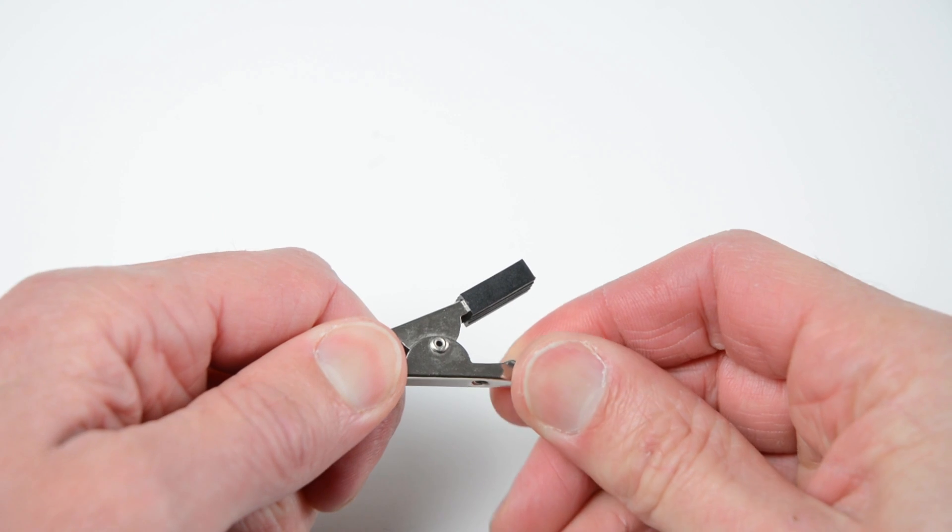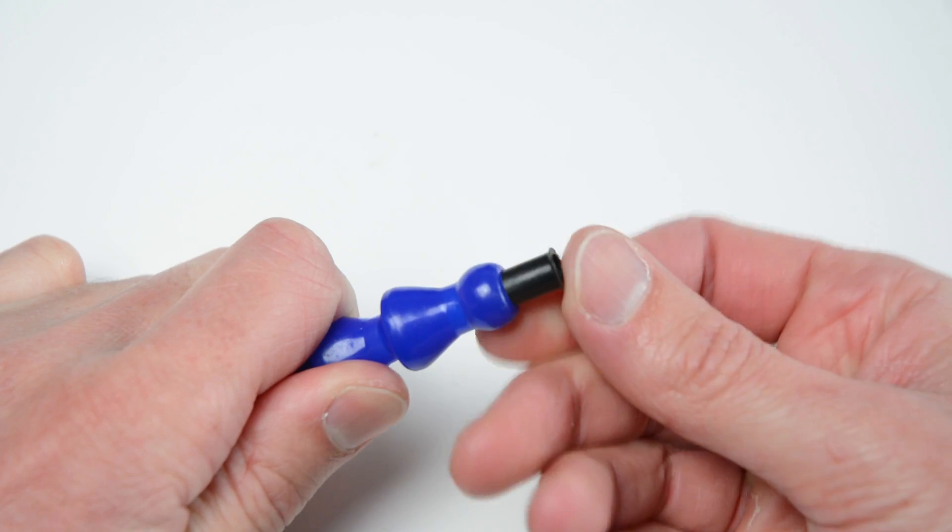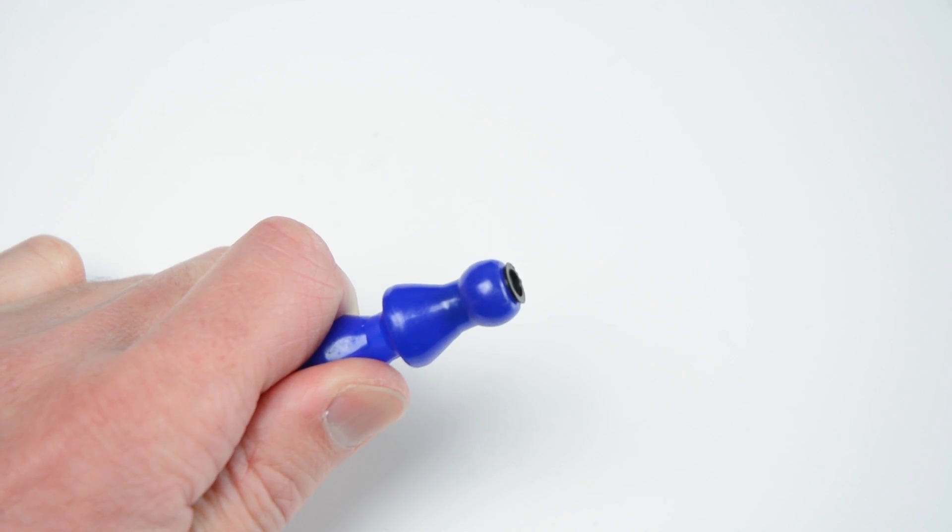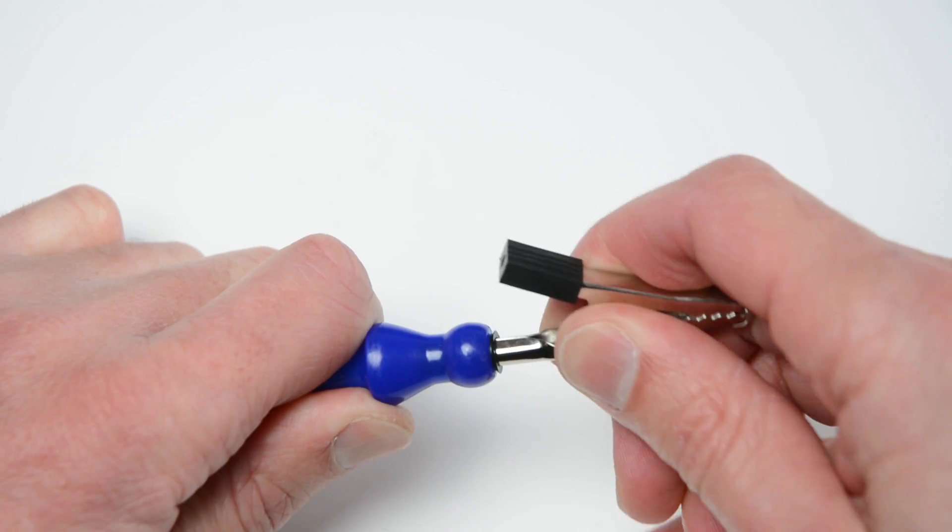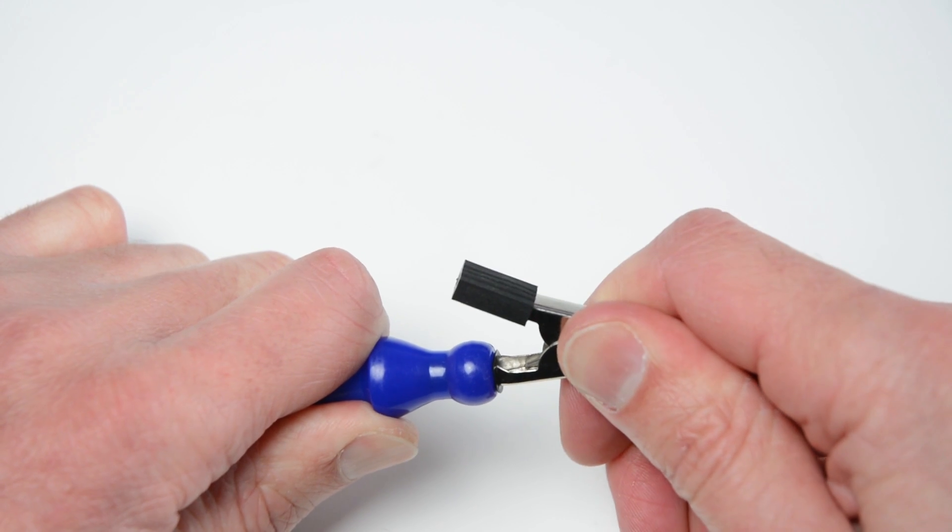Insert the plastic caps from the alligator clips into the ends of the pipes. If the alligator clip is loose slightly open up the base. Next insert the alligator clip into the plastic cap. Repeat this process with all four pipes.